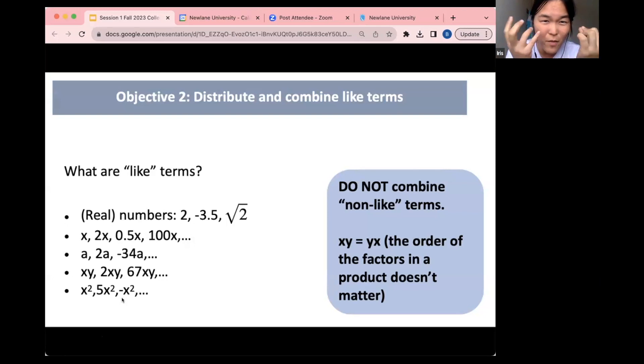I don't know if I'm making this more complicated. Somebody raise a hand? Yeah, can I clarify that under what are like terms, each bullet point represents examples of like terms in between the commas? Yes, yes, correct. Thank you.